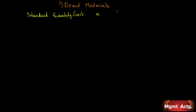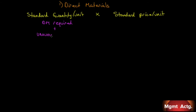Let's look at how we develop standards for each of the three manufacturing costs, starting with direct materials. We need a standard quantity per unit — keeping in mind we're doing this per unit — and a standard price per unit. Our quantity is not just the raw materials that enter into the finished good. It includes the direct materials required, plus unavoidable waste — for example, shaving off corners of a metal piece will lose a certain amount of material — plus rejects, because not every unit produced will meet specs.